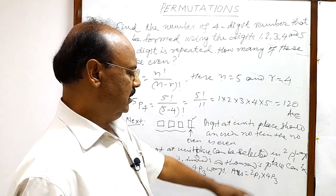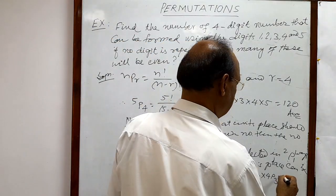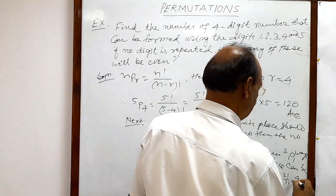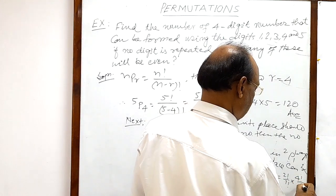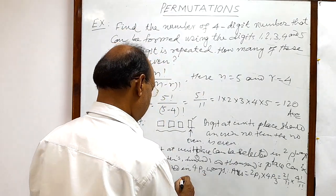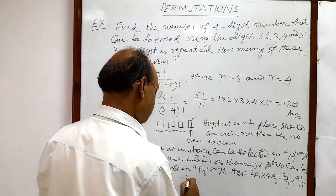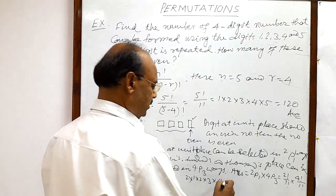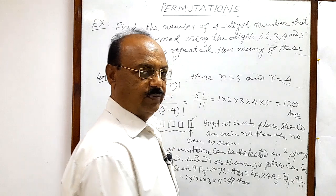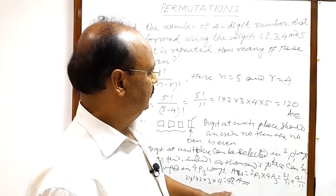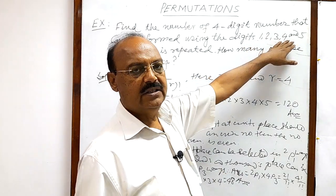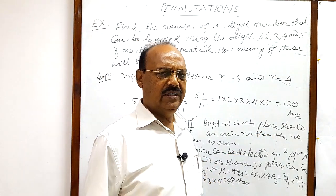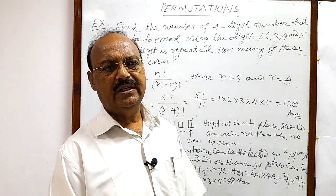2P1 = 2! / 1! = 2, and 4P3 = 4! / (4 - 3)! = 4! / 1! = 1 × 2 × 3 × 4 = 24. So the answer is 2 × 24 = 48. There are 48 even four-digit numbers that can be formed from these five digits when no digit is repeated. In the next video we will see some more problems.